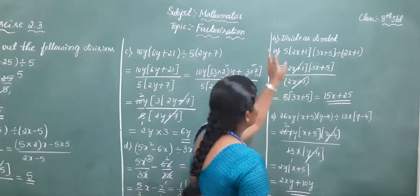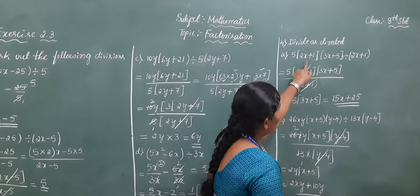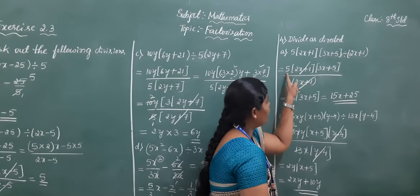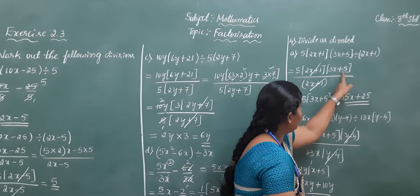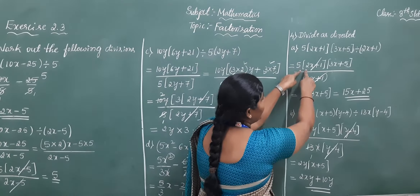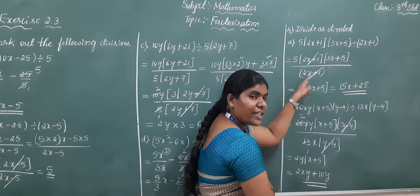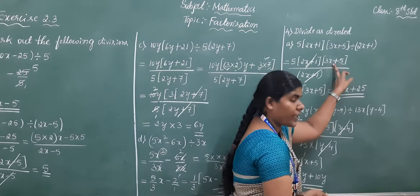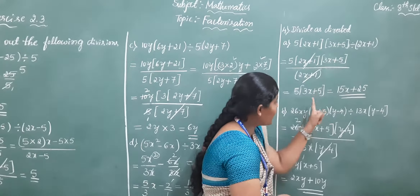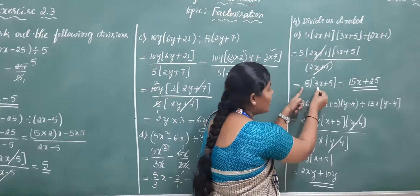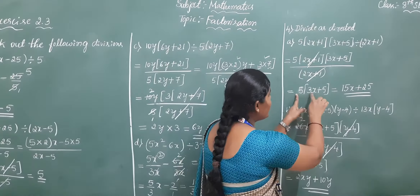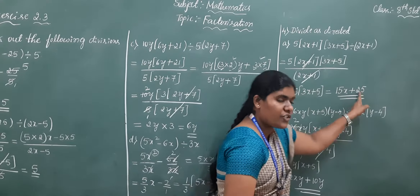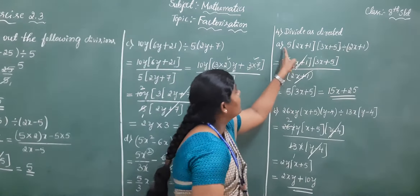Moving on to the fourth main question: divide as directed. The problem is 5 into (2x plus 1) into (3x plus 5) divided by (2x plus 1). Write it as is. The common term in numerator and denominator is 2x plus 1 — cancel both. Remaining term is 5 into (3x plus 5). Now multiply: plus into plus is plus, 5 threes are 15 into x, and 5 fives are 25. So 15x plus 25 is the answer.